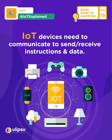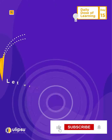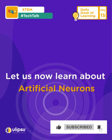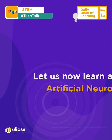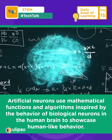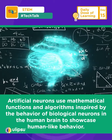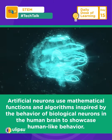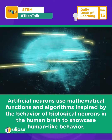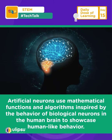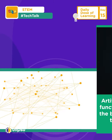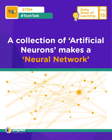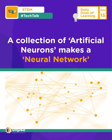Let us now learn about artificial neurons. Artificial neurons use mathematical functions and algorithms inspired by the behavior of biological neurons in the human brain to showcase human-like behavior. A collection of artificial neurons makes a neural network.